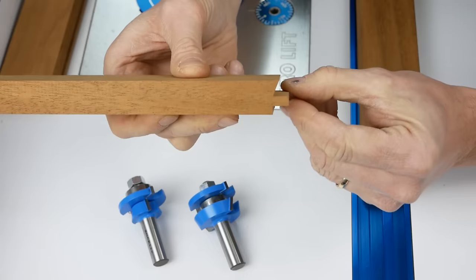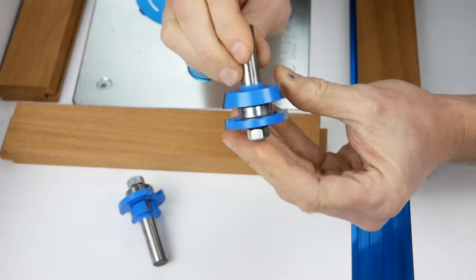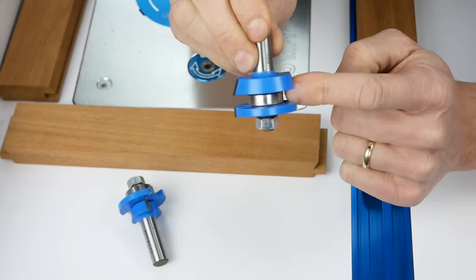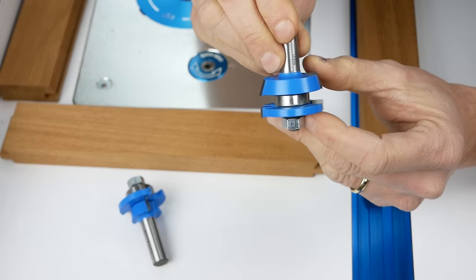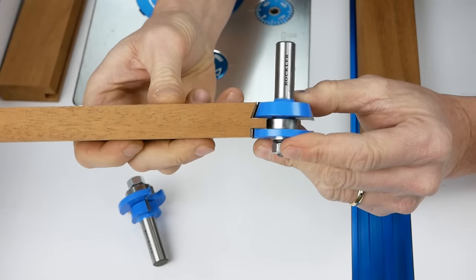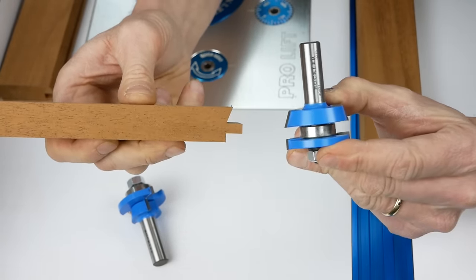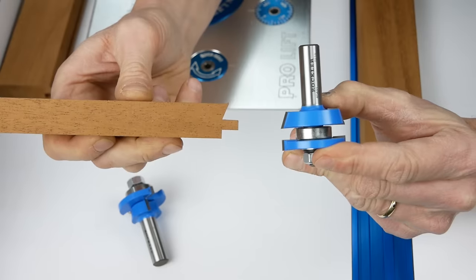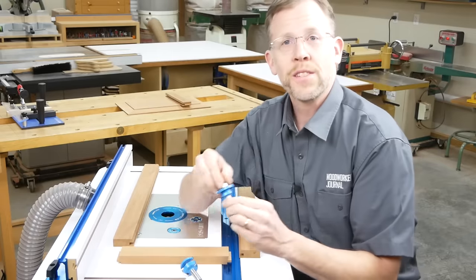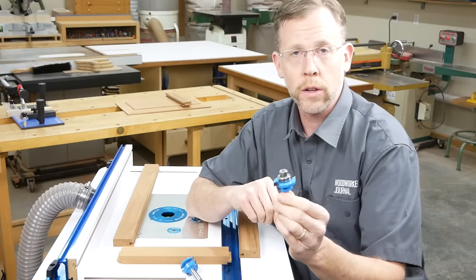We want to look for the bit that cuts this tongue on the end, and it's actually this bit right here. It's the one that has the pocket in the middle with a big bearing on the inside. Because, as you can see, that pocket creates the tongue. The bearing on the inside is a telltale sign. This is the coping bit or the rail bit.